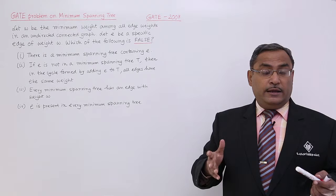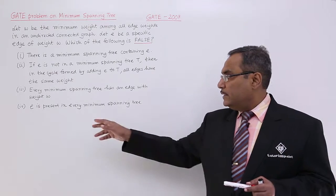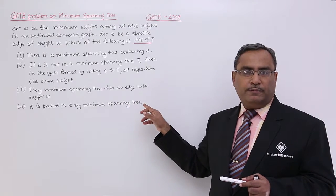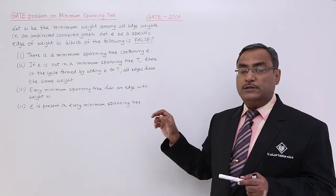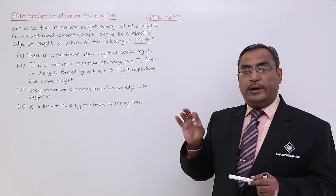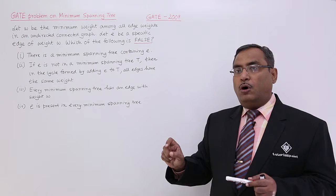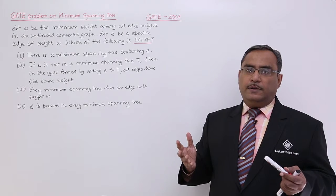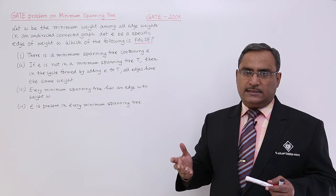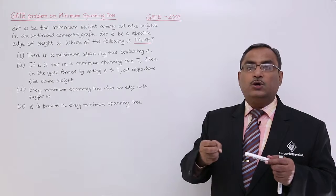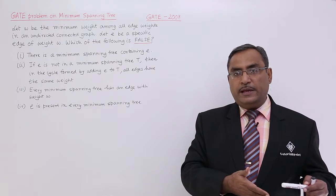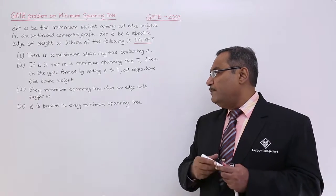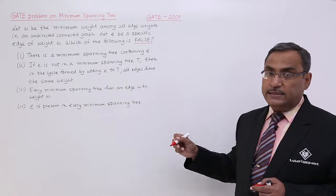That is guaranteed, but it will be with E only, that is not guaranteed. E is present in every minimum spanning tree - that is wrong because I cannot ensure that whenever a minimum spanning tree will be formed, E will be the part, because the graph itself may have all the edges having weight equal to W. In those cases, E may be eliminated, may not be considered. That is why E is present in every minimum spanning tree, this particular statement is highly false.